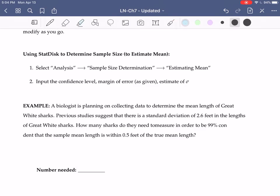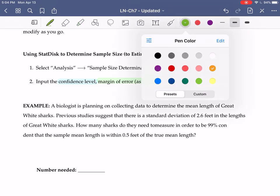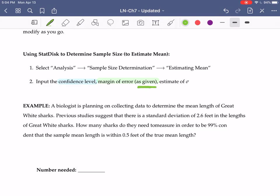Once we have done that, we need to input the confidence level. We input the margin of error, and this is a key thing here: we're inputting that margin of error as given. When we did this with proportions, we had to rewrite that margin of error as a percent and convert it to a decimal. Here, we input the margin of error for the mean as given.